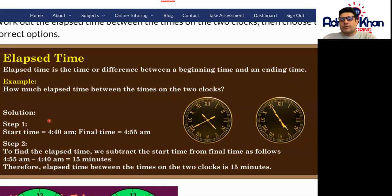We've got an example here of two clocks that you can see with Roman numerals there. How much elapsed time between the times on the two clocks? How much time has elapsed between these two particular clocks?